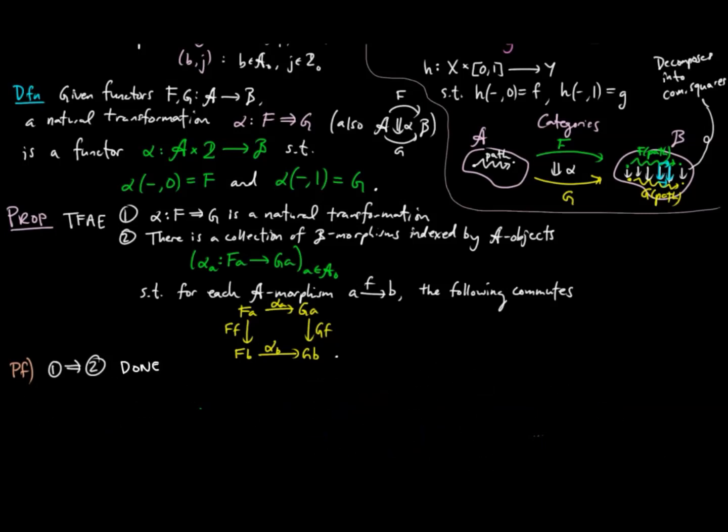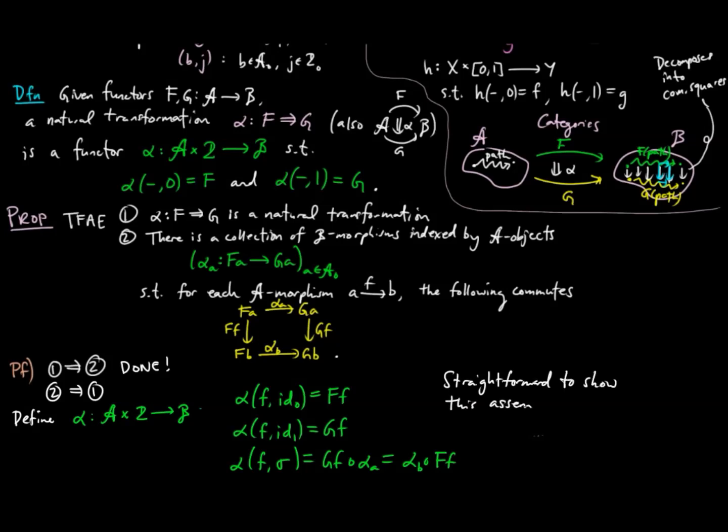Conversely, assume we are given such a collection of B morphisms. Then we define an assignment alpha, which takes F F identity on 0 to F of F, F the identity on 1 to G of F, and F sigma to GF alpha A, which is also equal to alpha B F of F. And it is straightforward to verify that this assignment defines a functor, completing the proof.